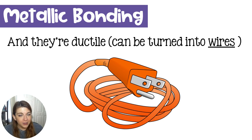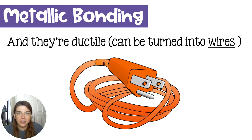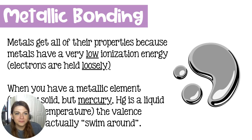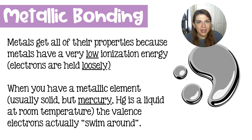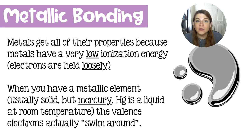Metals are also ductile, which is a unique property of metals — they can be turned into wires. The same is not true for nonmetals. Metals have all of these specific properties because their valence electrons are far from the nucleus and they don't have a lot of valence electrons.